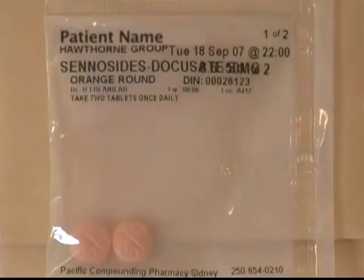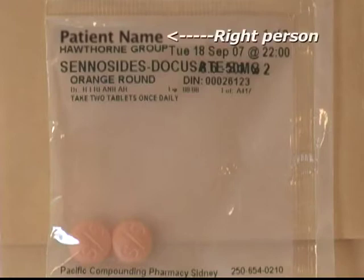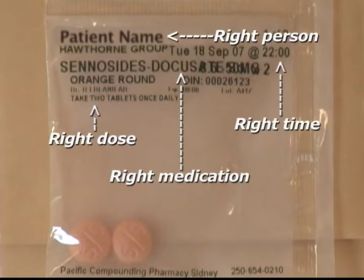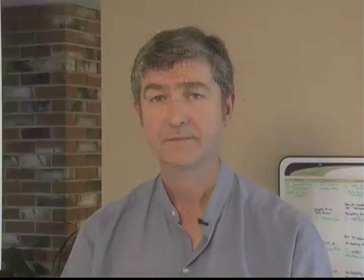If your place of work uses the pouch pack system, a pouch pack has the first four rights printed on the package: right person, right med, right dose and right time. You will be shown this during your orientation. If you make a mistake and the med accidentally drops on the floor or the particular blister you are using is damaged, note it in the appropriate documentation used at your site and obtain another med from the approved source. The contaminated med should be returned to the pharmacy for disposal.